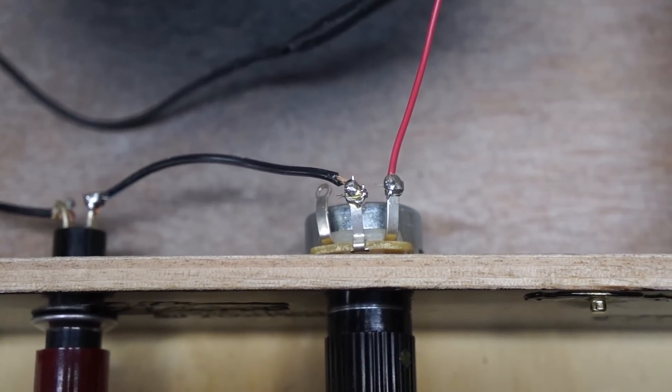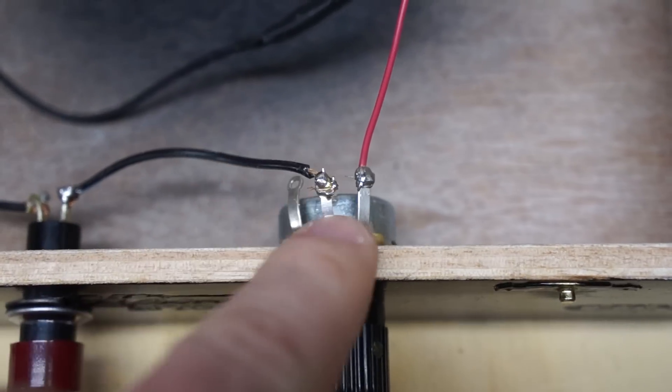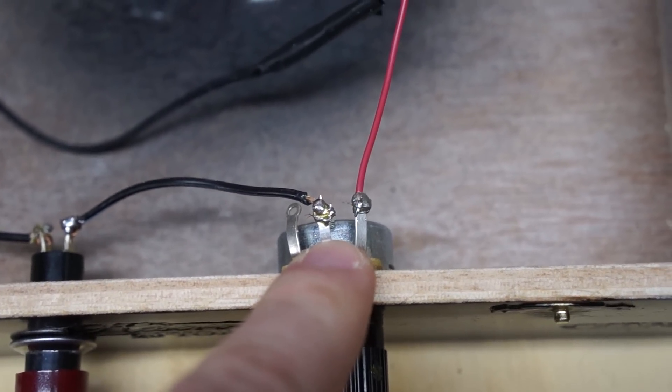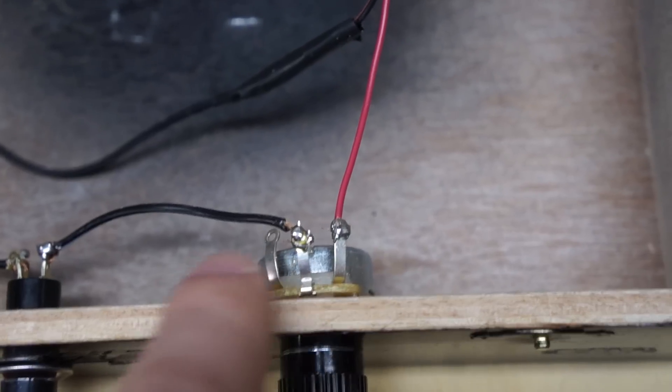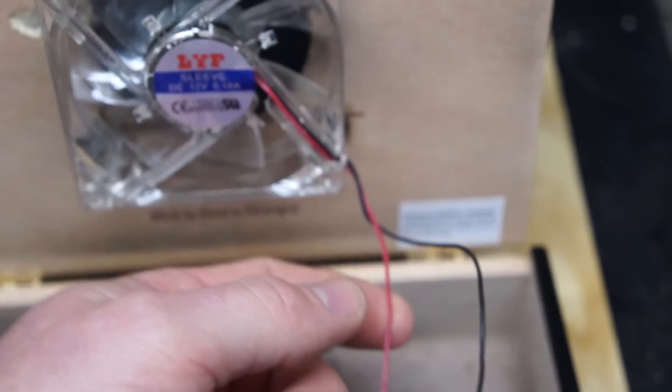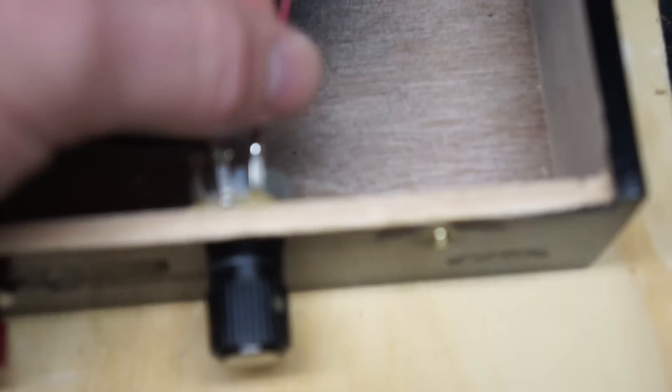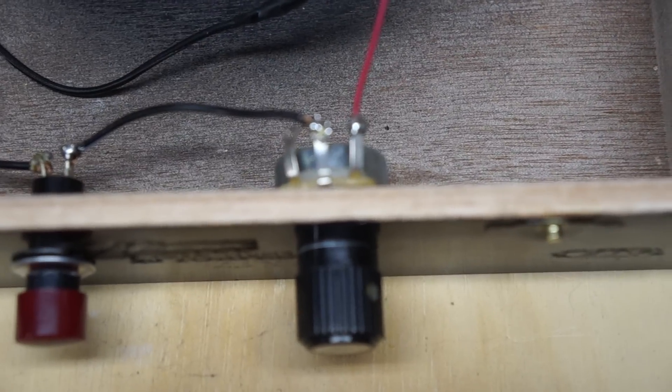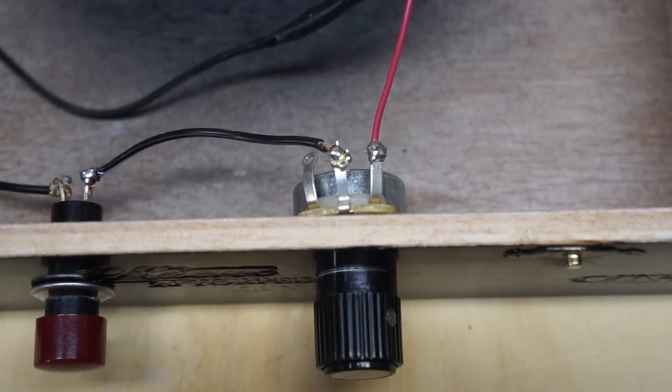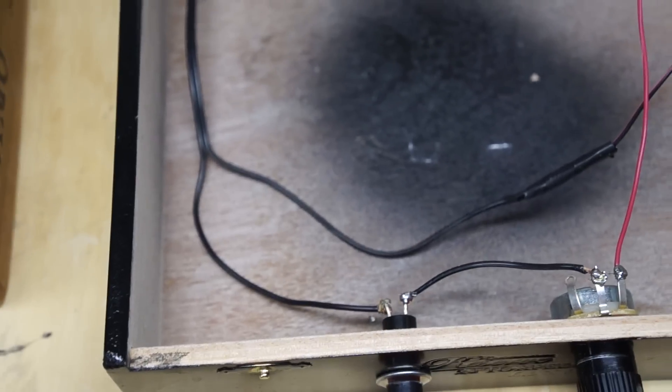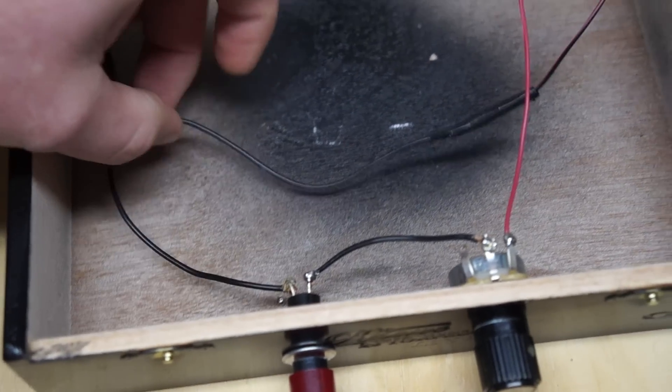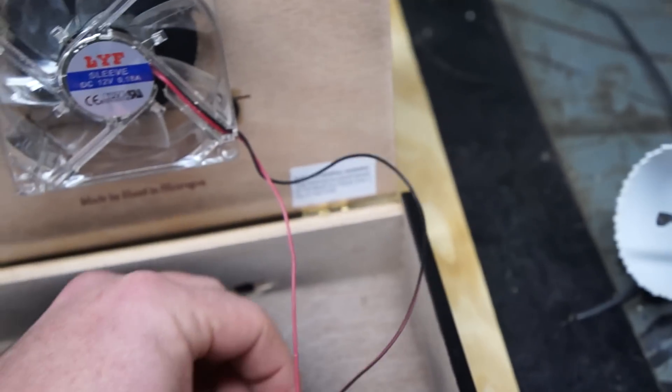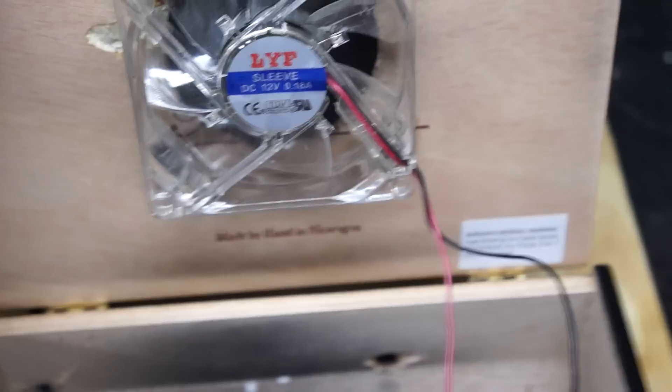Your rheostat will have three different prongs on it—run it to the center. Then you're gonna run from either one of these prongs, you're gonna run a power from your actual fan to one of the other side posts on that rheostat. Real simple. And don't forget about your ground—you're gonna have a ground wire that came off that AC plug. Run that ground directly to the ground from your fan.